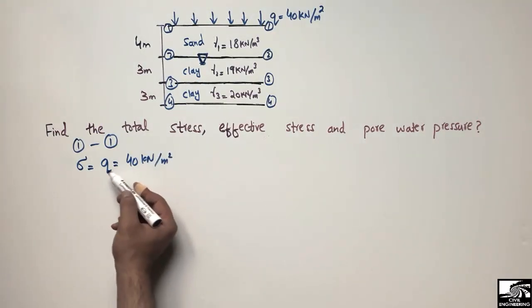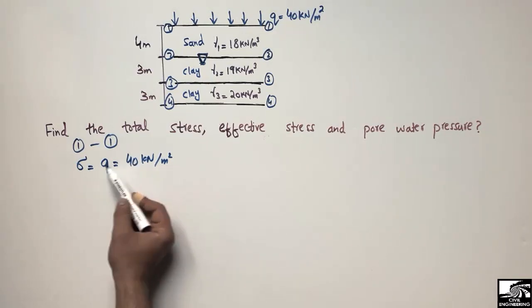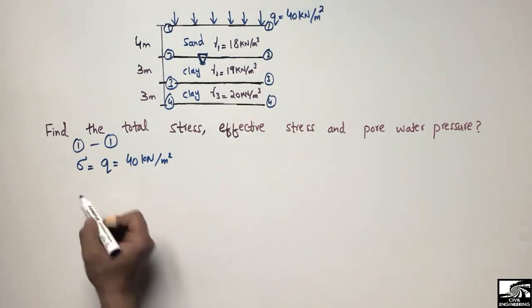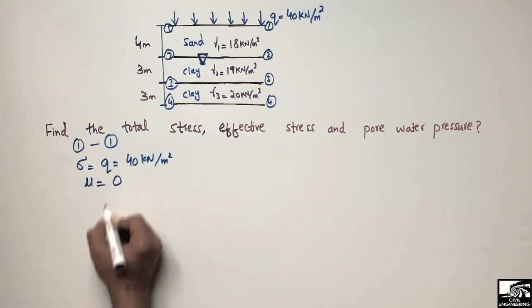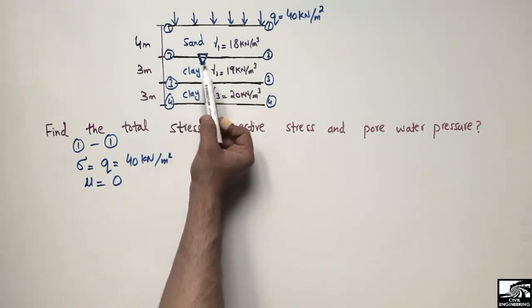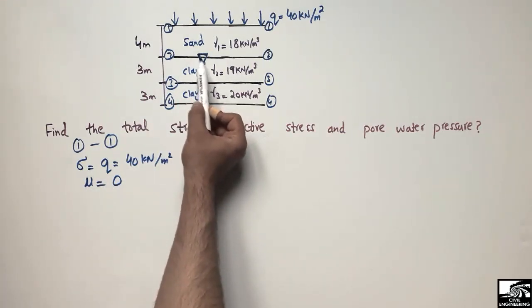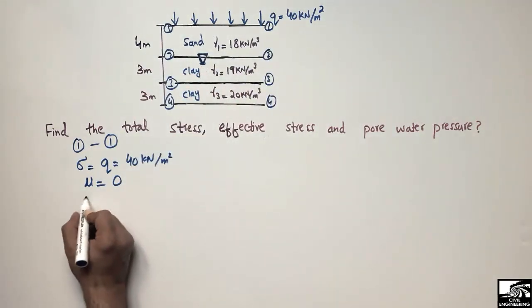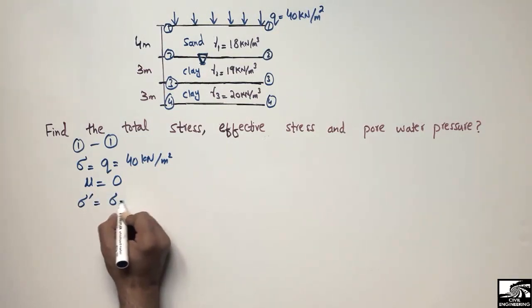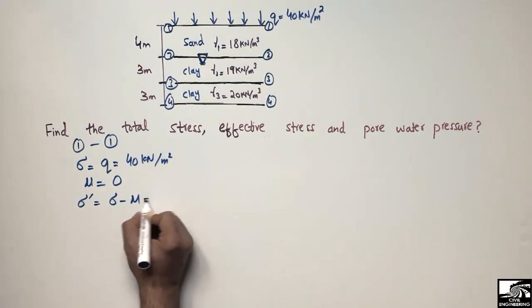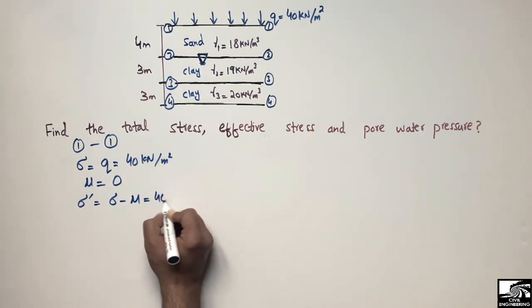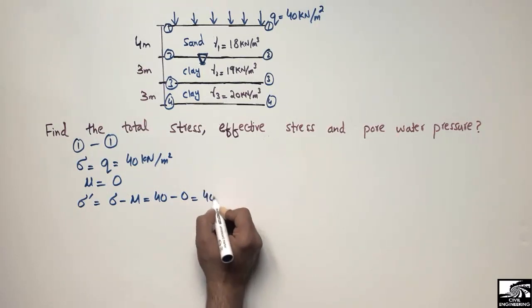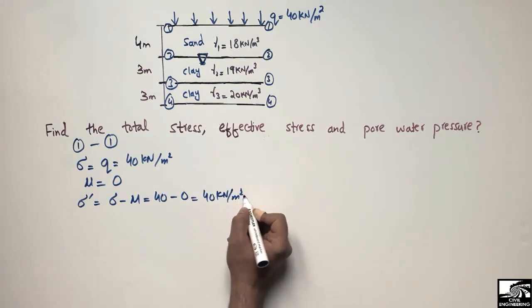At point 1-1, there is only external pressure acting on the soil, so total stress equals q = 40 kN/m². The pore water pressure is zero because the water table is acting below point 1-1. The effective stress equals total stress minus pore water pressure: 40 minus 0 equals 40 kN/m².